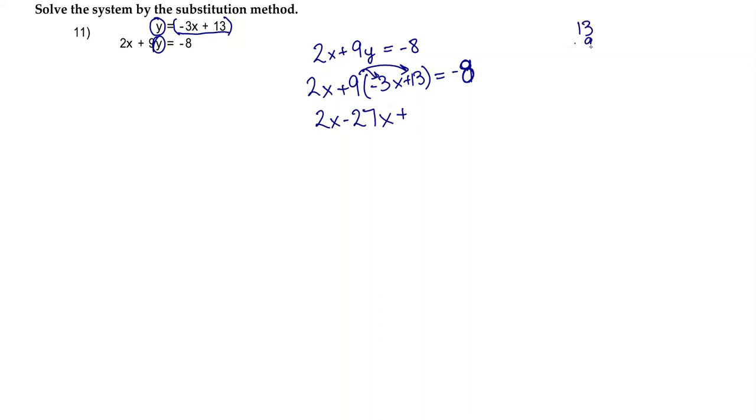I'm just going to go ahead and do it on the side here. 9 times 3 is 27. 9 times 1 is 9. 9 plus 2 is 11. So that is 117. And then I'm going to bring down my equals negative 8.